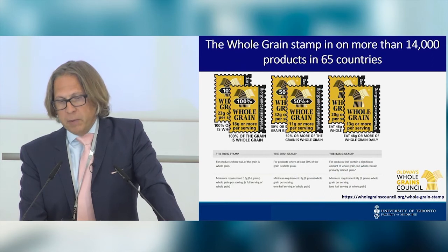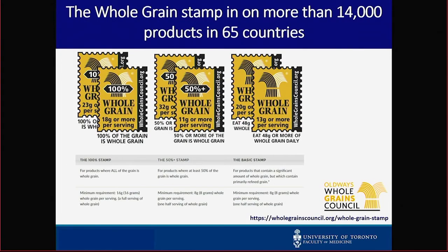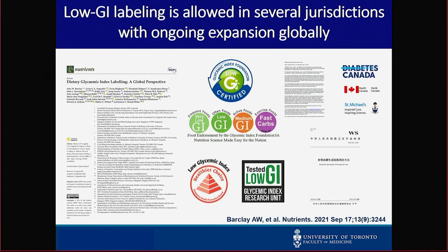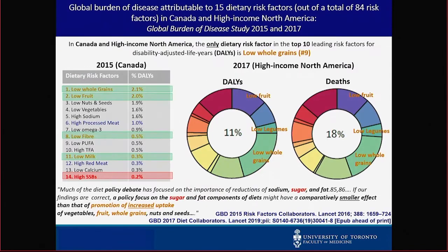There is uptake by companies and jurisdictions — something like the whole grain stamp is on more than 14,000 products in 65 countries, and most jurisdictions allow whole grain content claims. In fewer jurisdictions, low glycemic index labeling or symbol programs exist to communicate this to consumers. I don't think these have to add confusion — they can give greater confidence. The Global Burden of Disease project, funded by the Bill and Melinda Gates Foundation, uses population attributable fraction modeling across 84 risk factors — dietary risks are among the most important, with whole grains in the top 10.